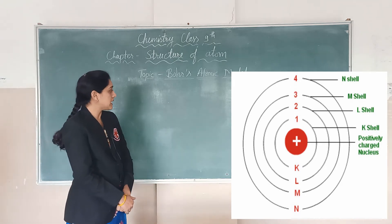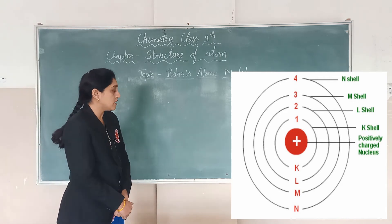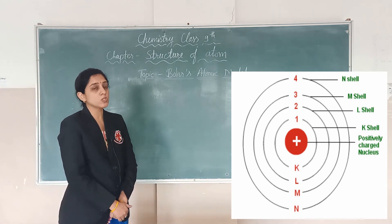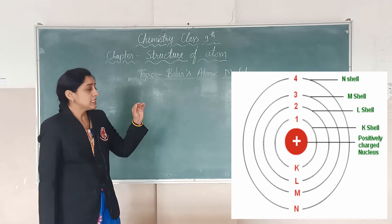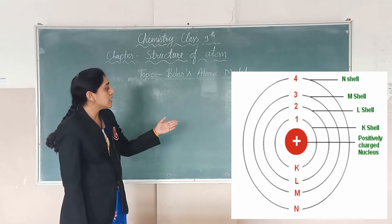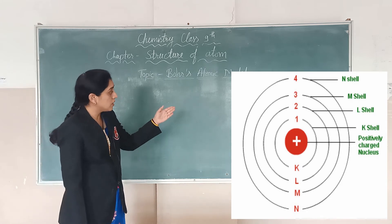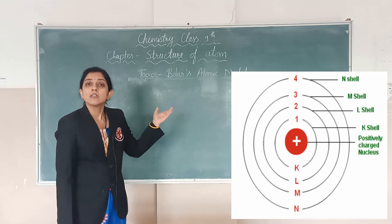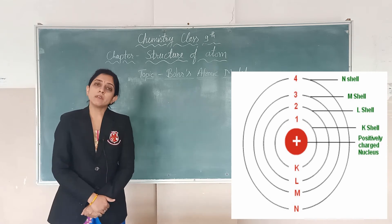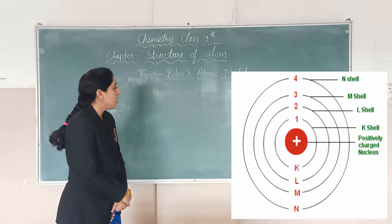Third point, we said that there are so many energy levels in which electrons or shells in which electrons rotate. And they can be calculated according to N is equal to 1, 2, 3, etc. Or in alphabetical manner, K, L, M, N.